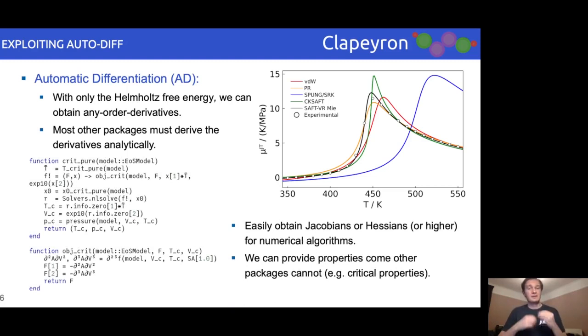Even more noteworthy, we can obtain critical properties. These properties typically depend on third order derivatives, which most other packages are unable to provide and therefore cannot provide critical properties. This is not a problem in Clapeyron, allowing us to easily obtain these properties.